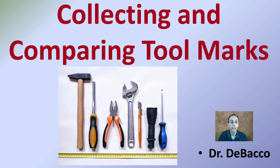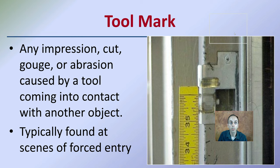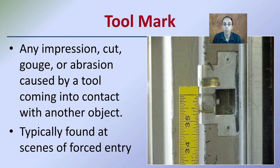Here we're going to be looking at collecting and comparing tool marks, which often are very important pieces of evidence in a crime scene. A tool mark is defined as any impression, cut, gouge, or abrasion caused by a tool coming in contact with another object, and they're typically found in forced entry scenarios.